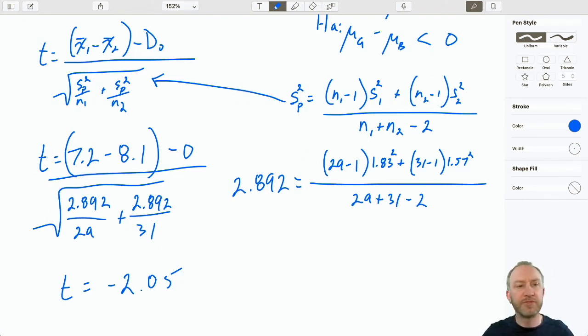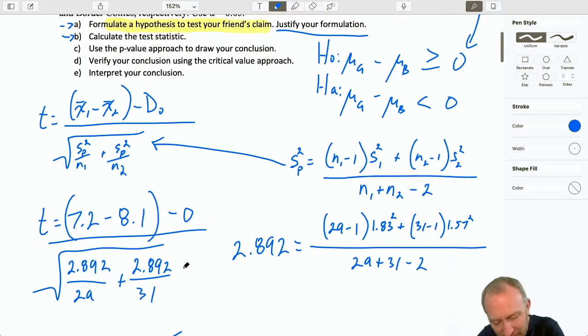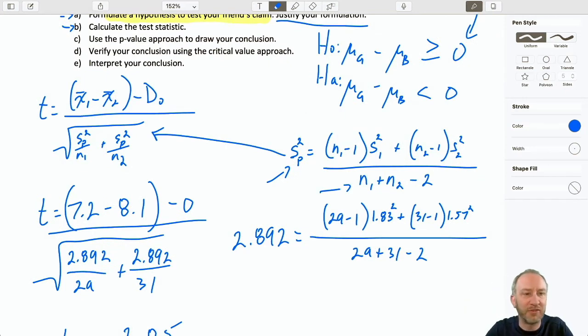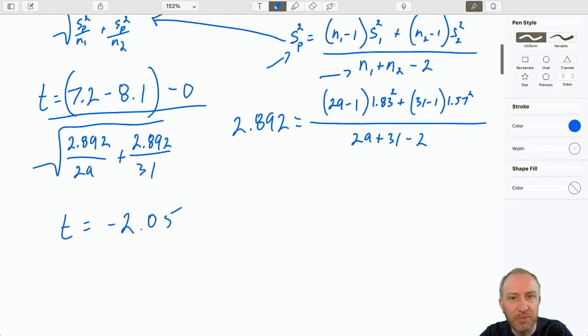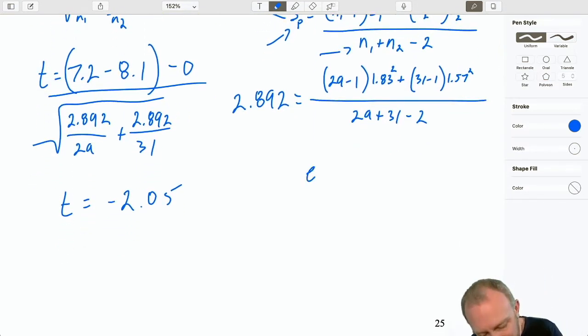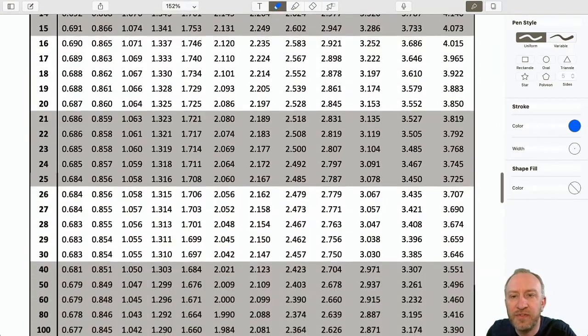Here we go. 7.2 minus 8.1 divided by 2.892 over 29 and over 31. That gives me my test statistic of negative 2.05. Good. Now, just like any other t-tests, same process. Again, so much of what we do in hypothesis testing is so similar. But, you can see when we have these small little differences. I have to calculate this pooled estimator, and now that's changed my degrees of freedom. But, the process is the same. I have my test statistic, 2.05. My degrees of freedom. Here I have 58 degrees of freedom.